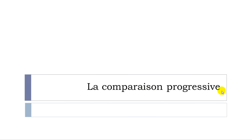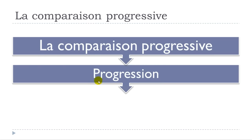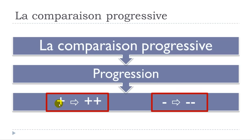La comparaison progressive is actually quite simple in French. When we talk about la comparaison progressive, we talk about la progression — the key word. It could go one way or the other, and you will use 'plus et plus' for increasing progression or 'moins et moins' for decreasing progression.